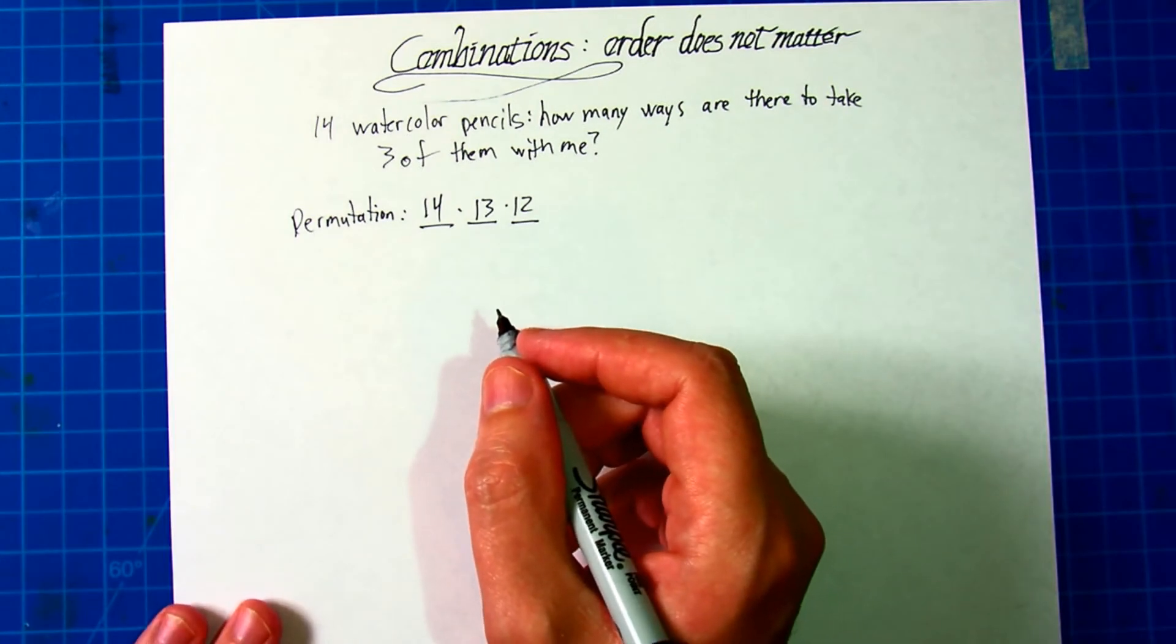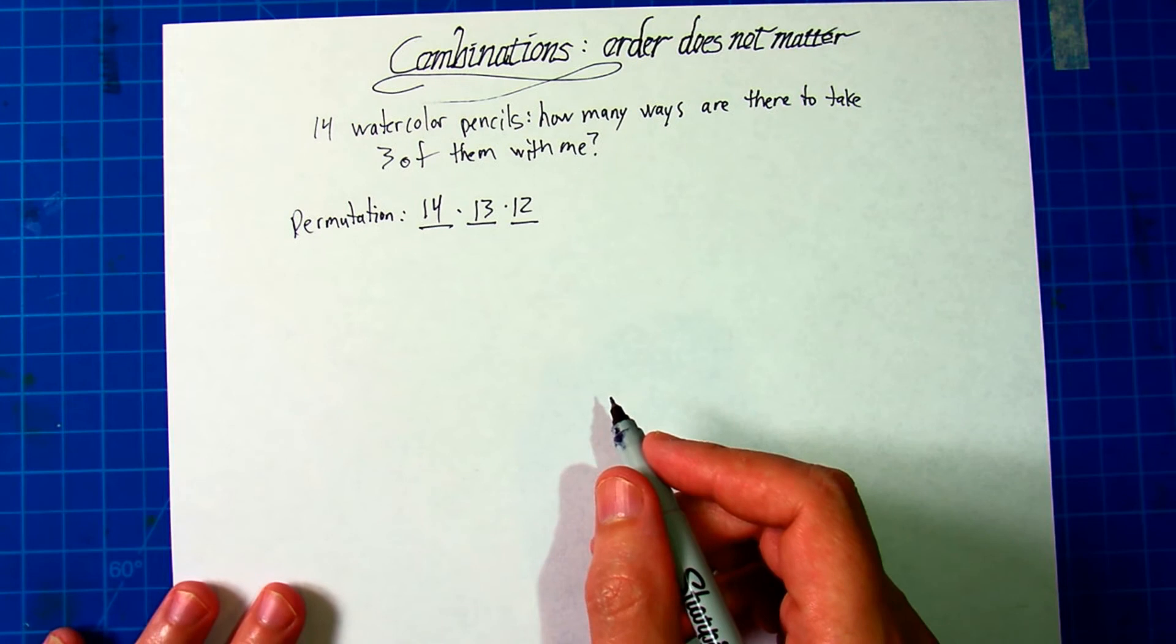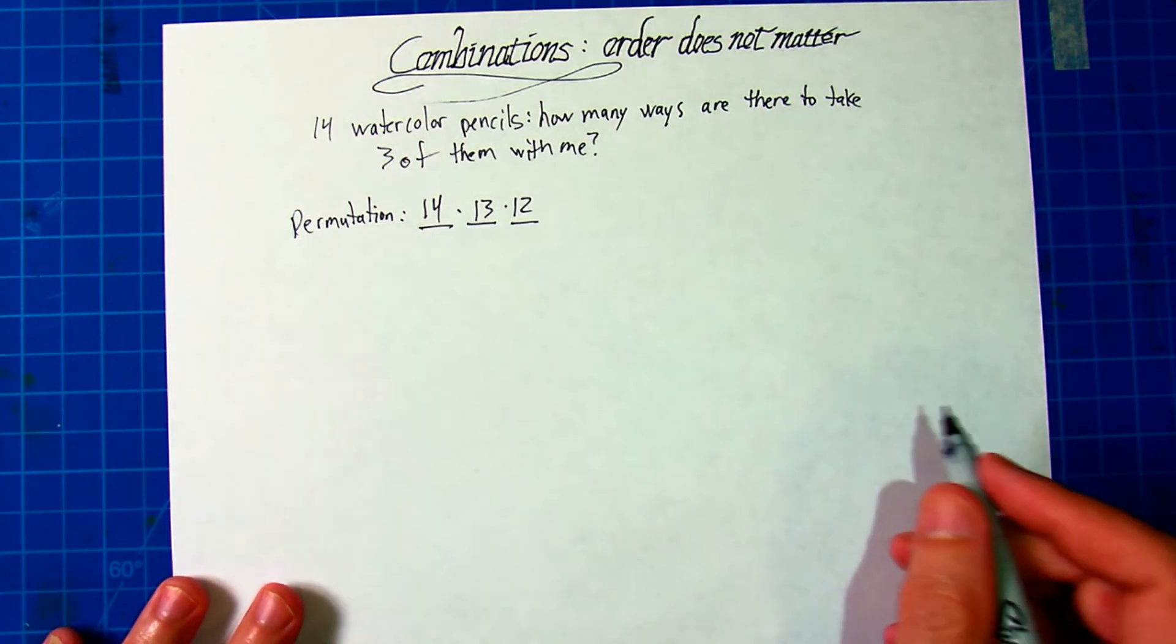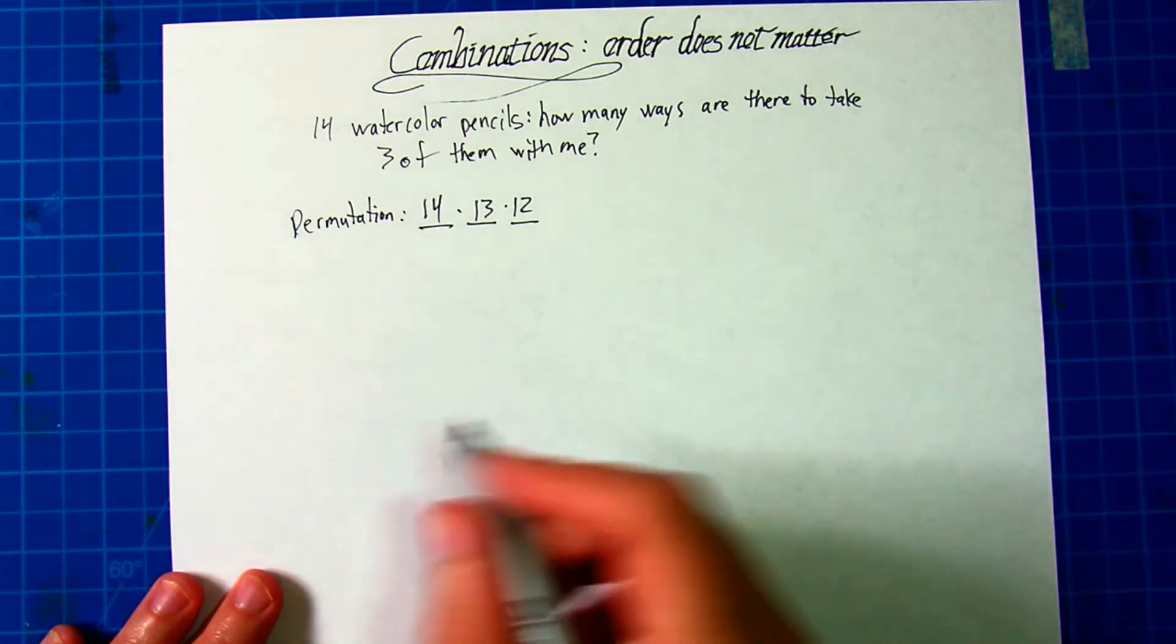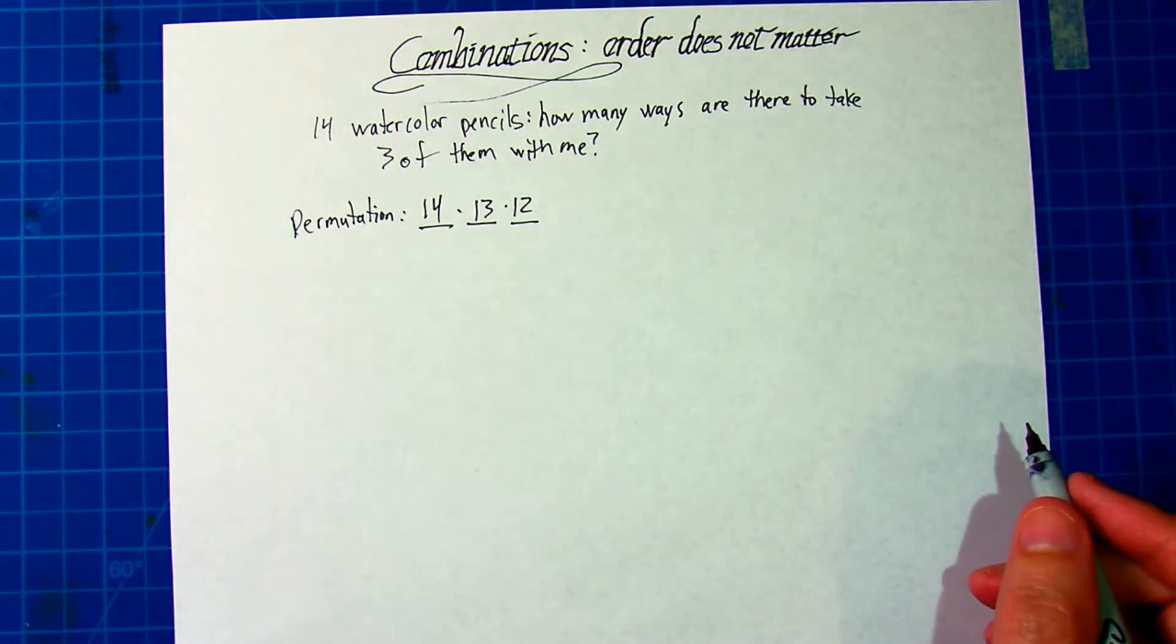That's where I need a combination. In combinations of things, order doesn't matter. It's all the same. Like in the lottery, if you match the numbers, it doesn't matter if you match them in the right order. If you're talking about Zoom breakout rooms and there's going to be four students in a room, it doesn't matter which student is first, second, third, or fourth.